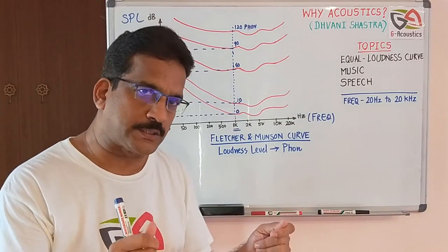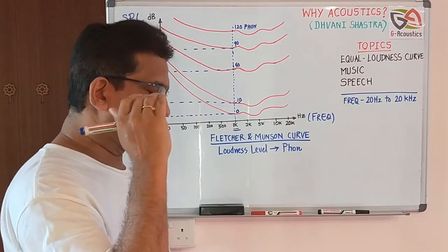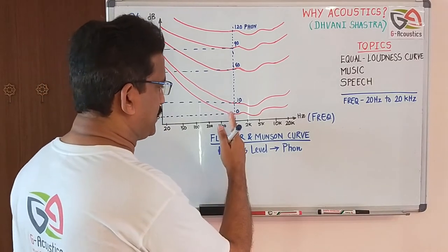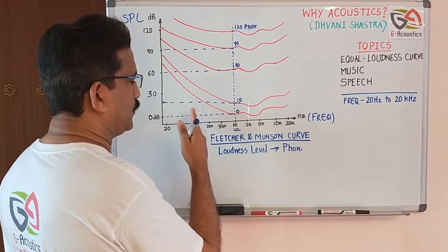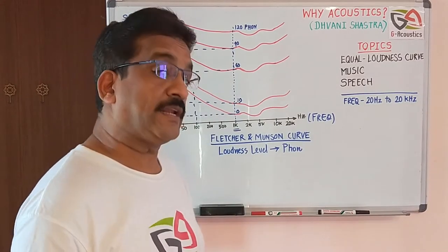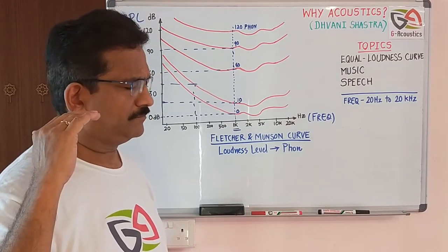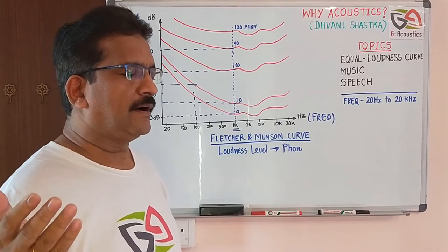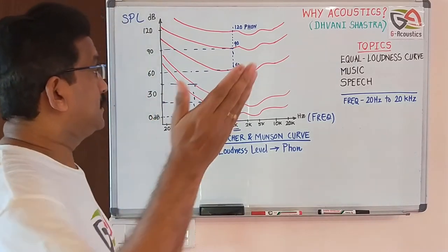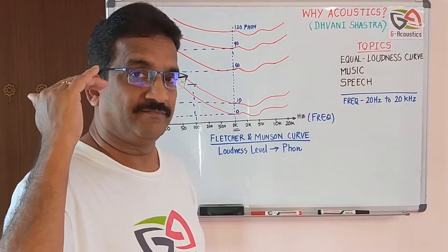For example, you are listening to a one kilohertz tone at 10 dB. Closing your eyes, you hear it at a particular loudness level. Then your friend changes the frequency to 100 hertz. At 100 hertz, 50 dB is needed. This is because at 100 hertz you cannot hear clearly at the original level — you need to raise the level to 50 dB to perceive the same loudness.